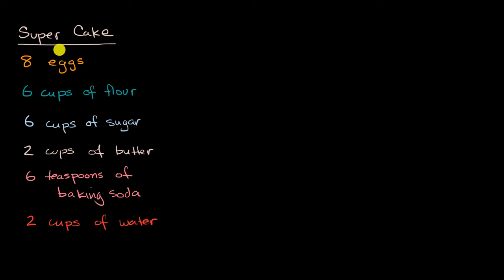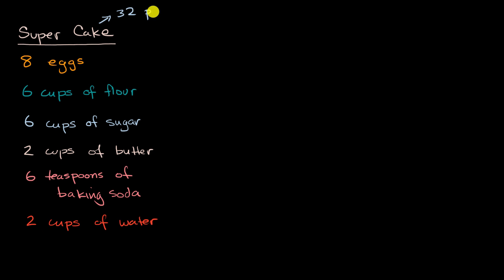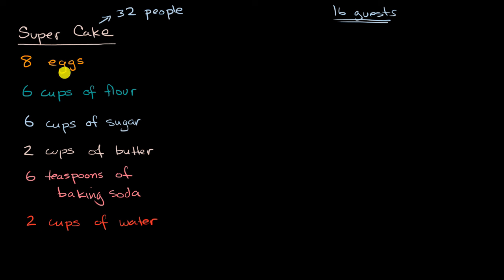So right over here, we have the recipe for super cake, which you want to make for your guests that are coming over for dinner tonight. But this recipe right over here, this is for 32 people — this would serve 32 folks. But you only have 16 guests coming over. So if you only have 16 guests coming over, what should be your ingredients here?